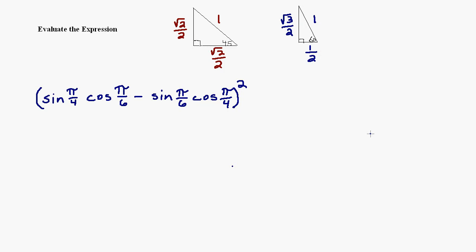In this video, we're going to evaluate an expression involving sine and cosine that's going to need to use the special triangles and some knowledge of radian measure. Here's the problem: we want to figure out what is the sine of pi over 4 times the cosine of pi over 6, minus the sine of pi over 6 times the cosine of pi over 4, quantity squared.